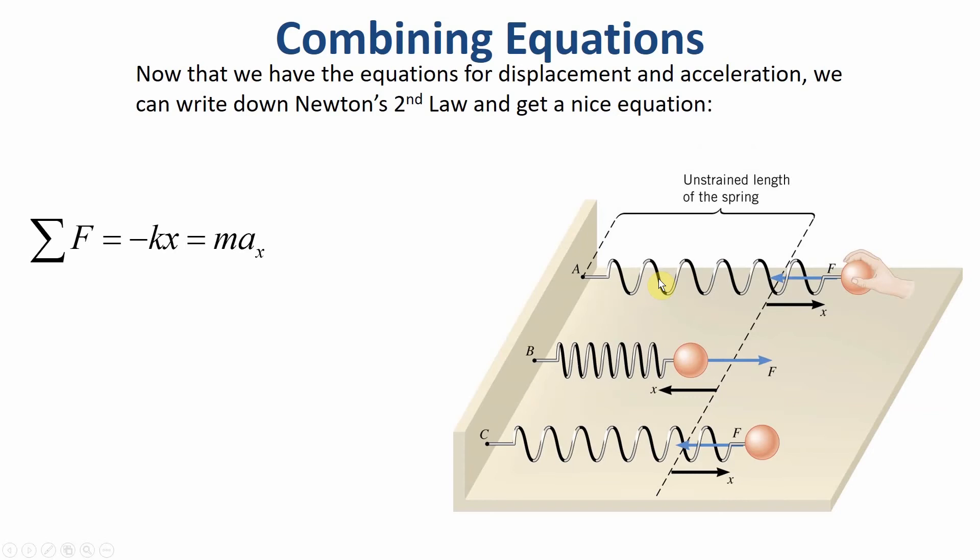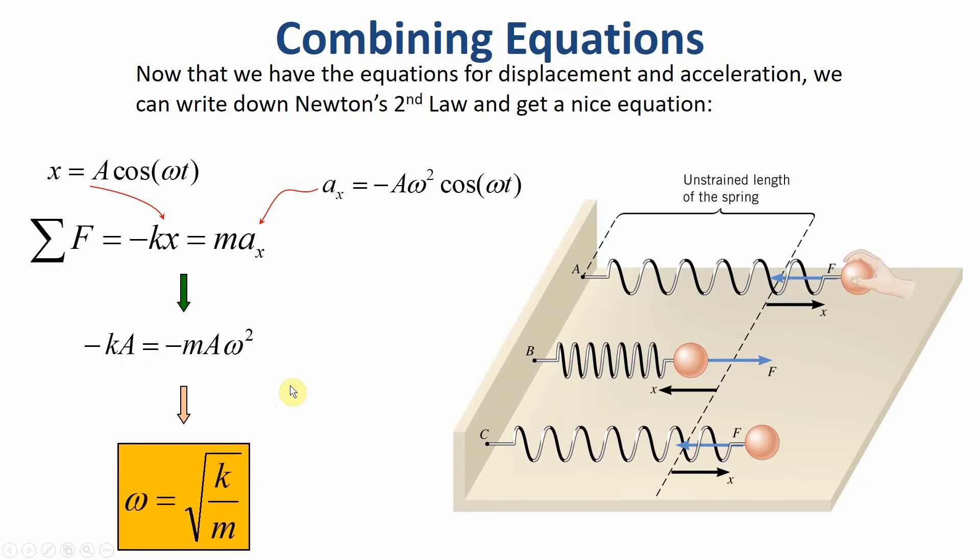Now I'm going to combine these equations that we've written down. I'm going to say f equals ma, and for Hooke's Law, this f is negative kx. I'm then going to throw in the equations on the previous slides for x and a. So I do that, and my cosine omega t cancels out. My minus signs are going to cancel out, my a is going to cancel out, and I can solve for omega. And I get a simple equation that says my angular frequency is the square root of k over m. So you give me a spring and a mass, I can tell you its frequency or its period of oscillation.